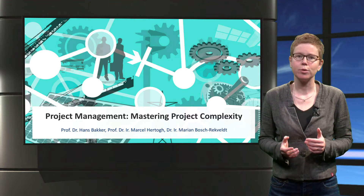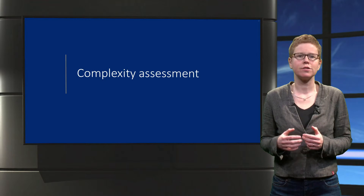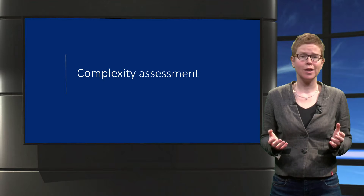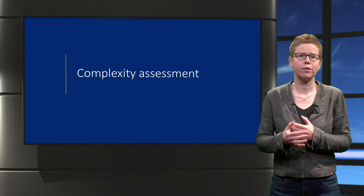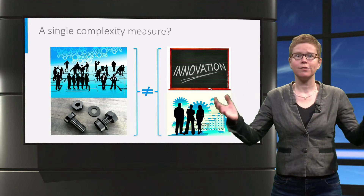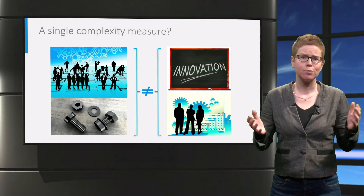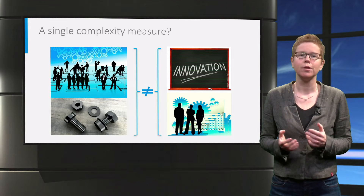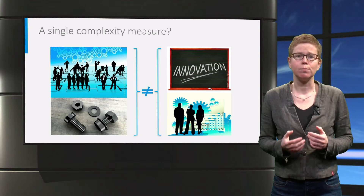When we developed our complexity framework between 2007 and 2009, we started doing a literature study on complexity models in general. To our surprise, the majority of the models found at that time were simply adding up several indicators of complexity. For example, a project with many stakeholders and known technology would score equally complex as a project with innovative technology and a limited amount of stakeholders — but mainly one-dimensional measures were used.